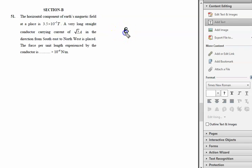The horizontal component of Earth's magnetic field, B_H, is given by 3.5 × 10^-5 tesla. A very long straight conductor carrying current of √2 ampere in the direction from southeast to northwest.